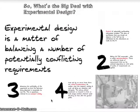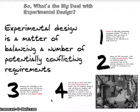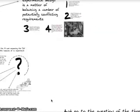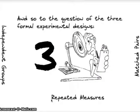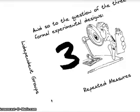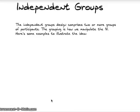Those are the four big considerations that make an experiment a valid design. Now, what are the three formal experimental designs? First, we have the independent groups design. The independent groups design involves two or more groups of participants — sticking to two is simplest, but you could have many groups. The grouping is how we manipulate the IV.